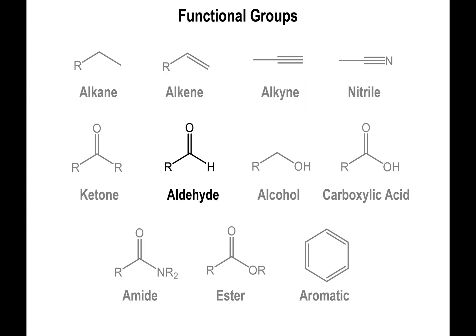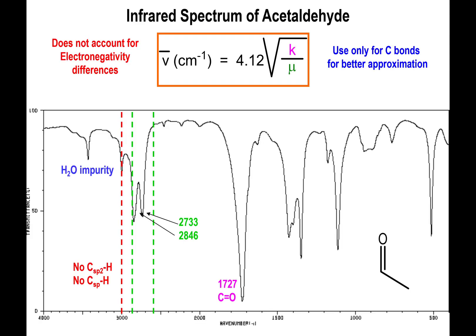This brings us to aldehydes. Aldehydes have two specific features that are noteworthy. The first is, of course, the carbonyl peak — aldehydes still contain that C=O double bond, so you do have that carbonyl peak appearing slightly higher than ketones, but roughly in the same ballpark. Just looking at the carbonyl, you probably couldn't tell an aldehyde from a ketone. But what gives it away is the peaks between 2600 and 2800 wave numbers — a double dip that represents the C-H bond directly bound to the carbonyl.